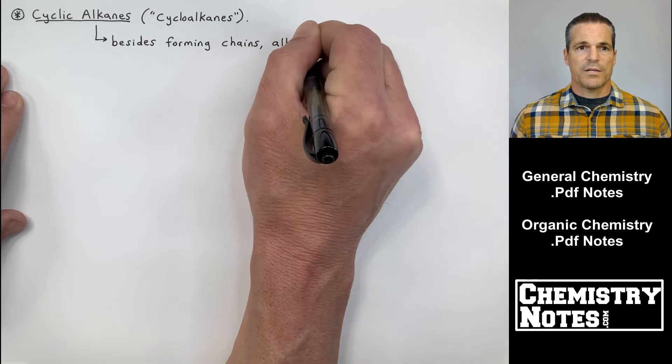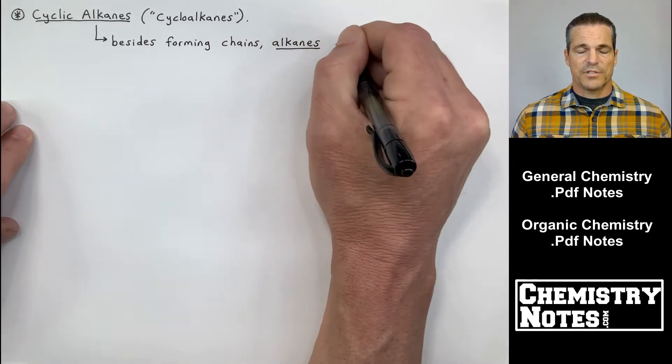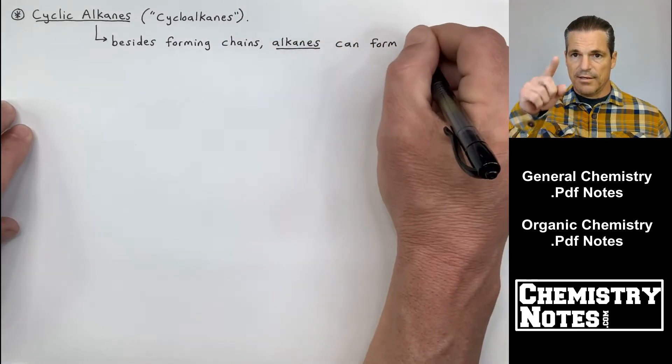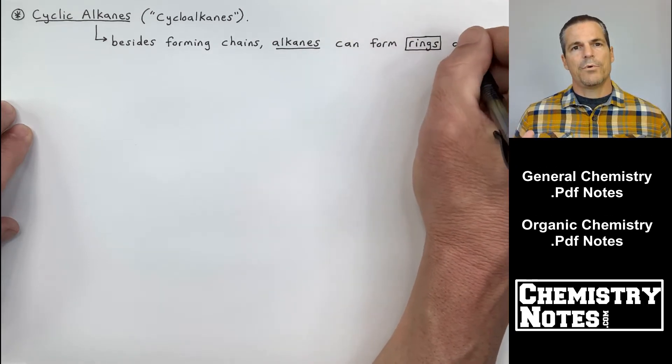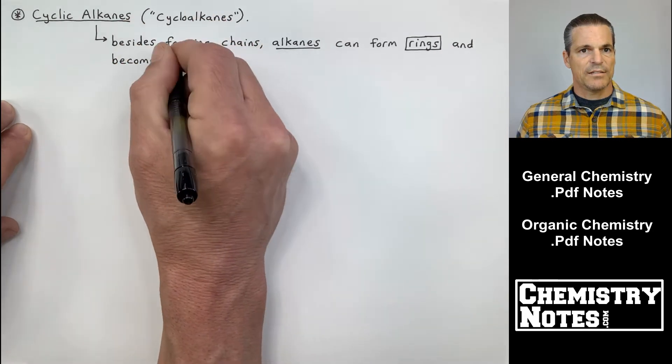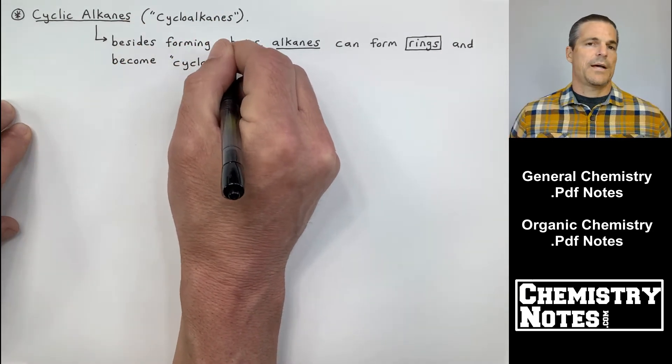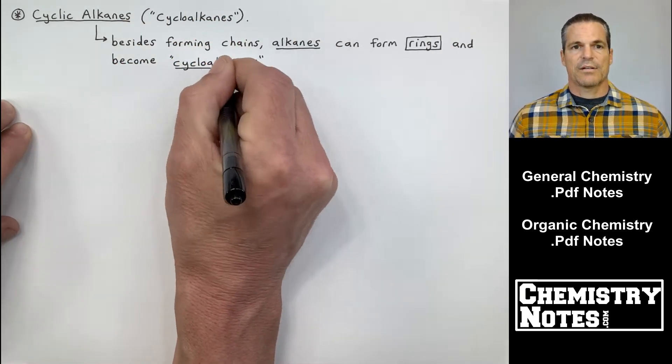In this video, I want to talk about cycloalkanes, which are just alkanes in a cycle, in a ring. And then I'm going to move into alkenes and alkynes. And then in the next video, we'll learn how to name alkenes and alkynes.